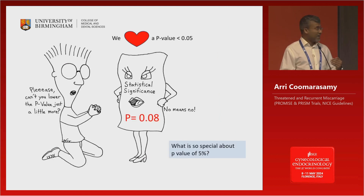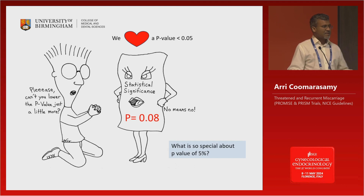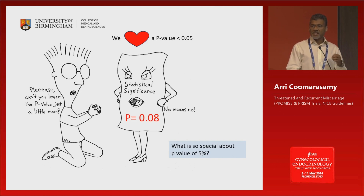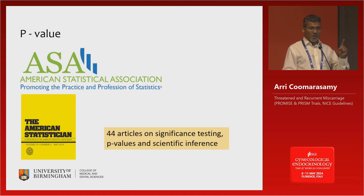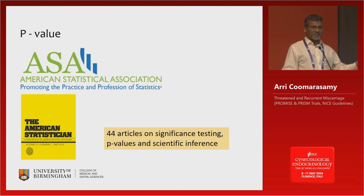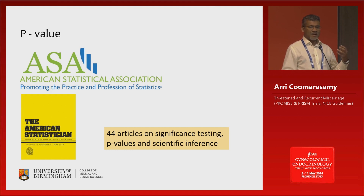It turns out there is something not right here. We are all gunning for a p-value less than 0.05 because we call that statistically significant, and we say it is very, very special. But it is not so special. The largest statistical association in the world — the American Statistical Association — says there is nothing really that special about a p-value of less than 0.05. In fact, they are so insistent, and so fed up that we use this dichotomous approach to statistical significance, they have written 44 articles on this subject, telling us off for doing this and advising that we shouldn't be breaking down results into significant and non-significant.